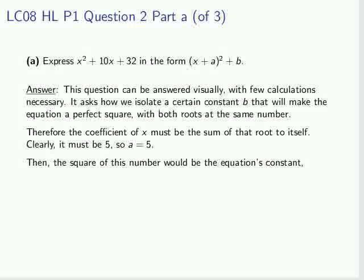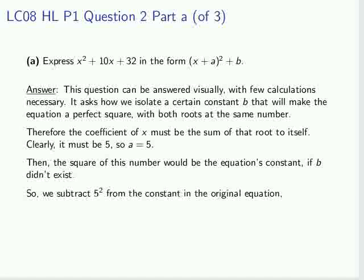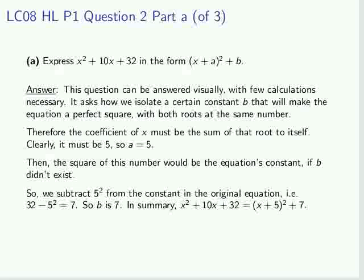Then the square of this number would be the equation's constant if b didn't exist. So we subtract 5² from the constant in the original equation. In other words, 32 minus 5² equals 7. So b is 7. In summary, (x + 5)² + 7 is the answer.